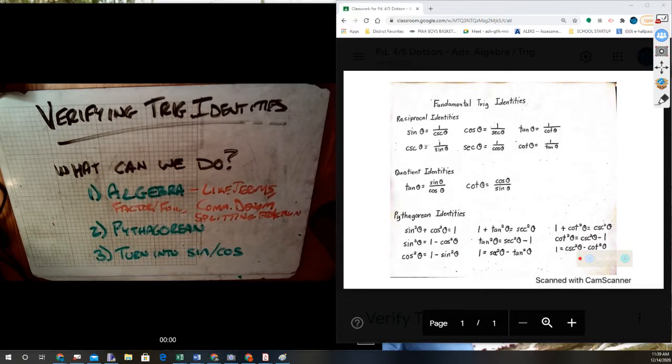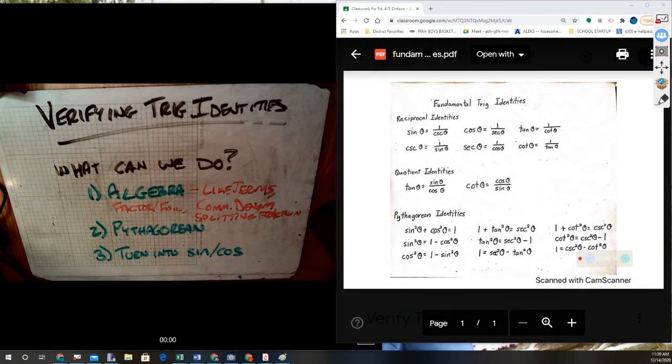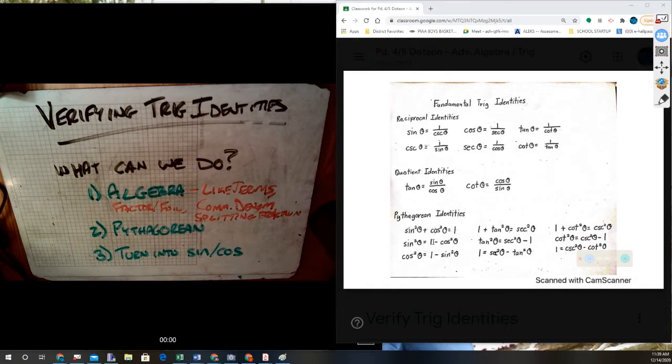The other thing we're going to look at is anything with a Pythagorean identity. So all of these Pythagorean identities over here, anytime you have something with a one and something squared, a Pythagorean identity is showing up there. Or the big one, like sine squared plus cosine squared equals one. Those are the big Pythagoreans.